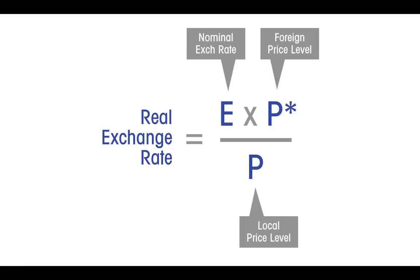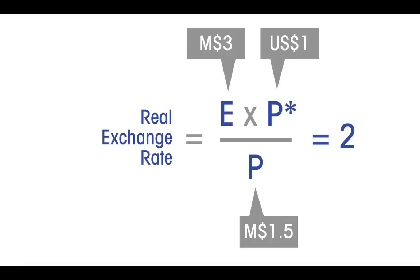Let's test it using the numbers from our example. If the nominal exchange rate is 3, the price of the foreign product is 1, and the price of the local product is 1.5, then we get the same 2 chips that it takes to buy the beer. Remember that this is just an index number, so its absolute value has no meaning.